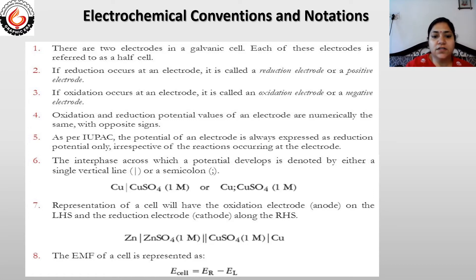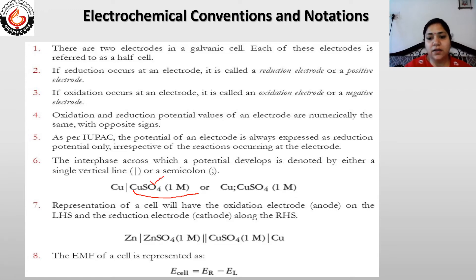The interface across which a potential develops is denoted by either a single vertical line or a semicolon. When writing a half cell or a complete cell, this line is placed between the electrode and the electrolyte, and is sometimes shown by a semicolon. For example, Cu | CuSO₄ (1 M) indicates that copper is dipped in a solution of copper sulfate with 1 molar concentration.